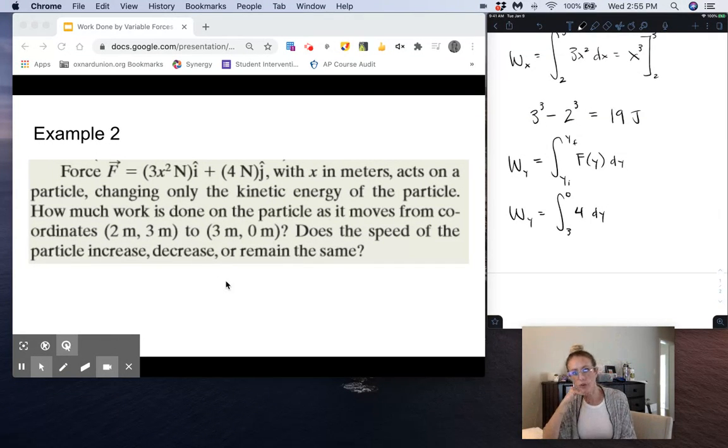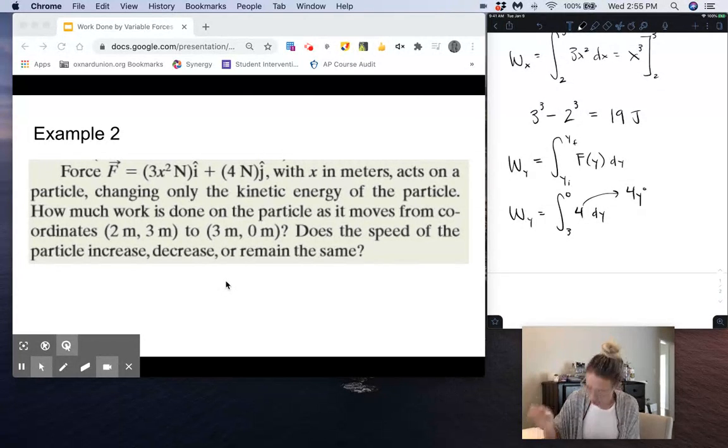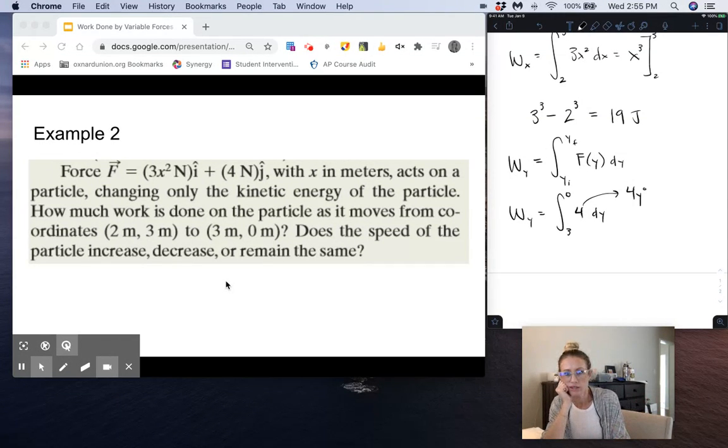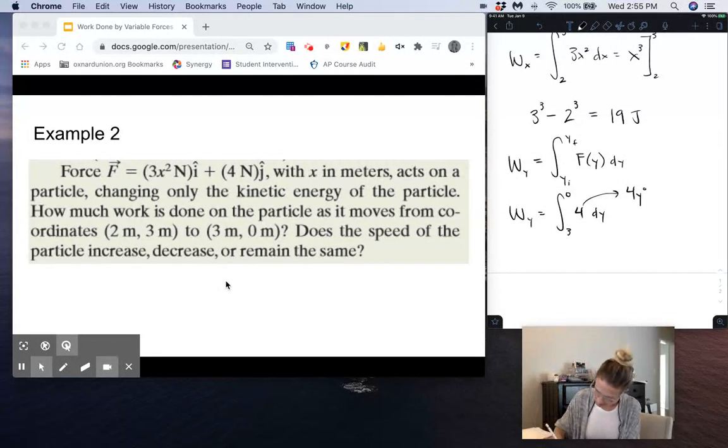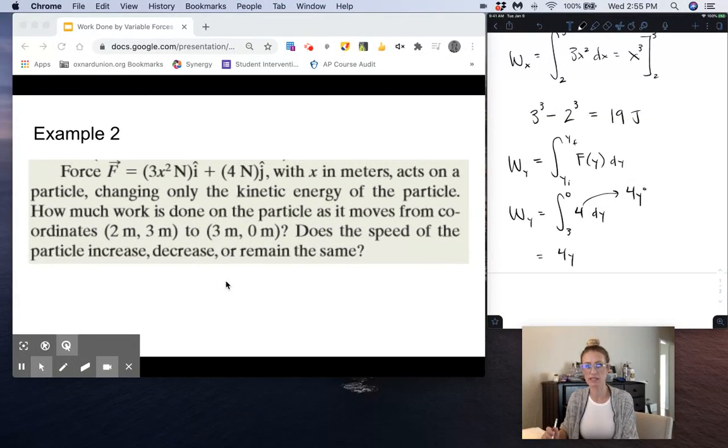Now 4 like this is just like having 4y to the 0, right? Because y to the 0 is just 1. So 4 times 1 is 4. We're going to add 1 to that exponent and that becomes 1. 4 divided by 1 is just 4, so we end up getting 4y for this. That makes sense because if we take the derivative of 4y it becomes 4. Remember, derivative is opposite of the integral.